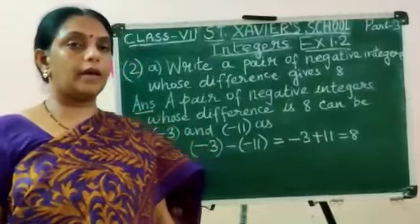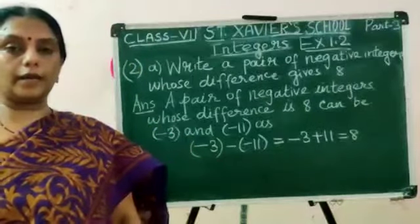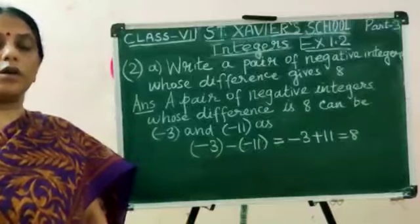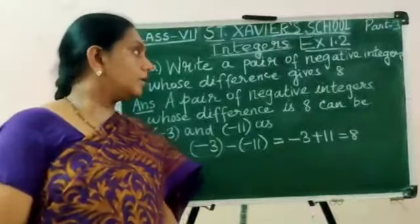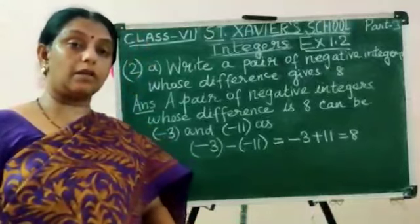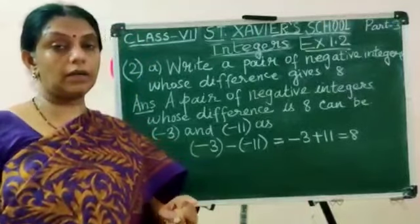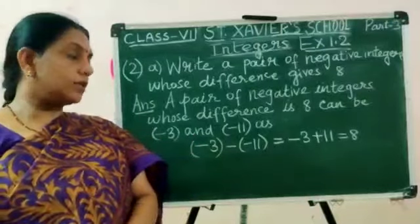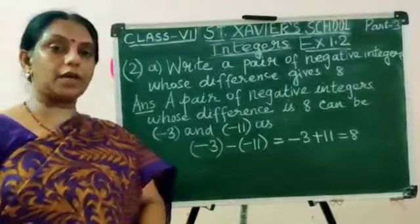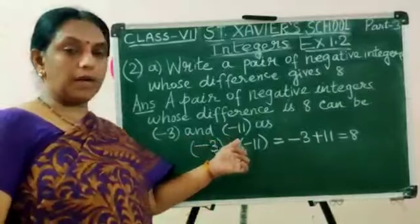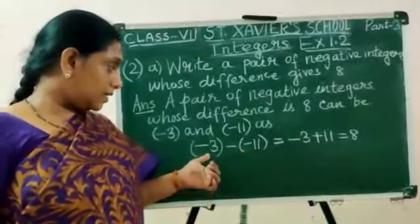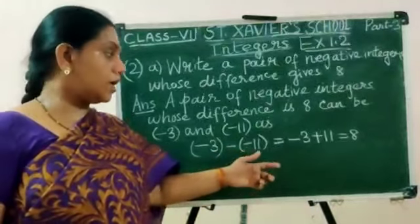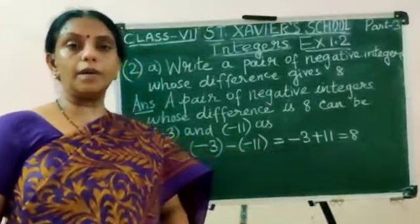Question number 2A: write a pair of negative integers whose difference gives 8. Both integers must be negative, and their difference should give 8. A pair of negative integers whose difference is 8 can be minus 3 and minus 11. So minus 3 minus (minus 11): minus and minus becomes plus, so minus 3 plus 11 equals 8.